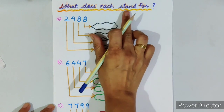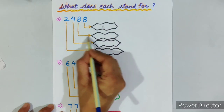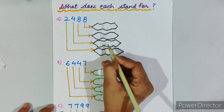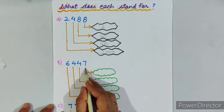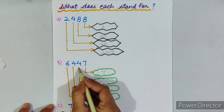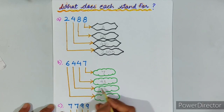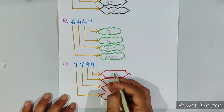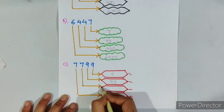What does 8 stand for? Here 8 stands for 8. Here 8 stands for 80. And here 4 stands for 400. Here 2 stands for 2,000. Now in the next sum: here 7 stands for 7, 4 stands for 40, this 4 stands for 400, and 6 stands for 6,000.